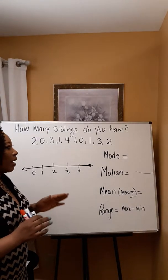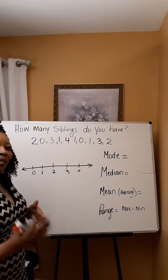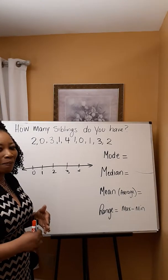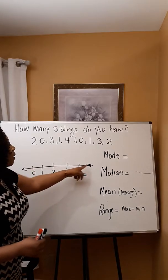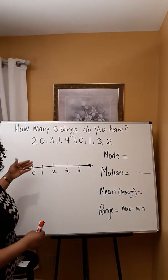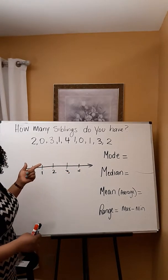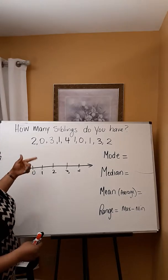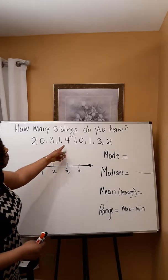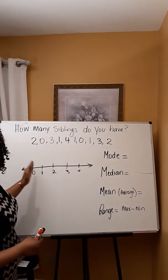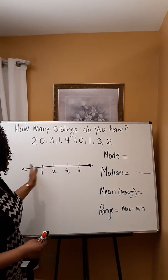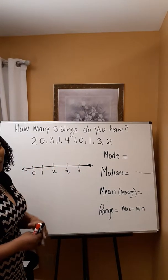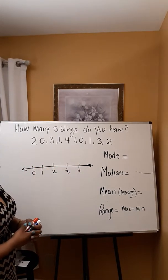I'm going to explain how I formulated my dot plot. I drew a number line. I identified a minimum, which is zero, and then I identified a maximum, which is four. And I went ahead and continued my number line, identifying all the numbers within the set of data.